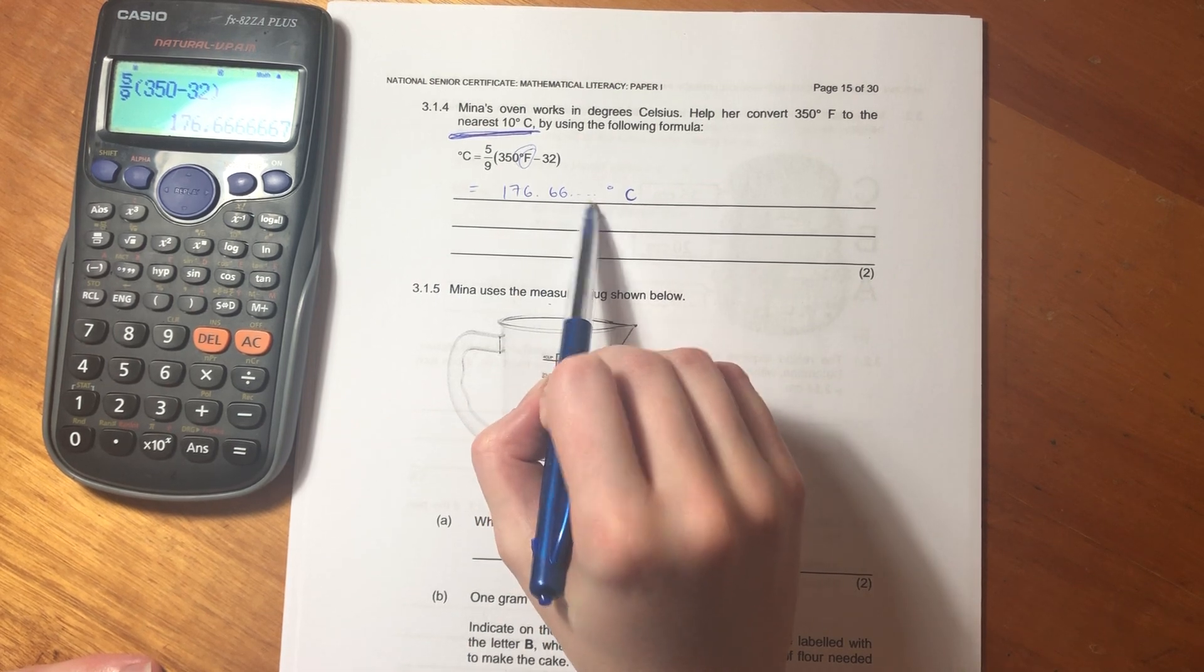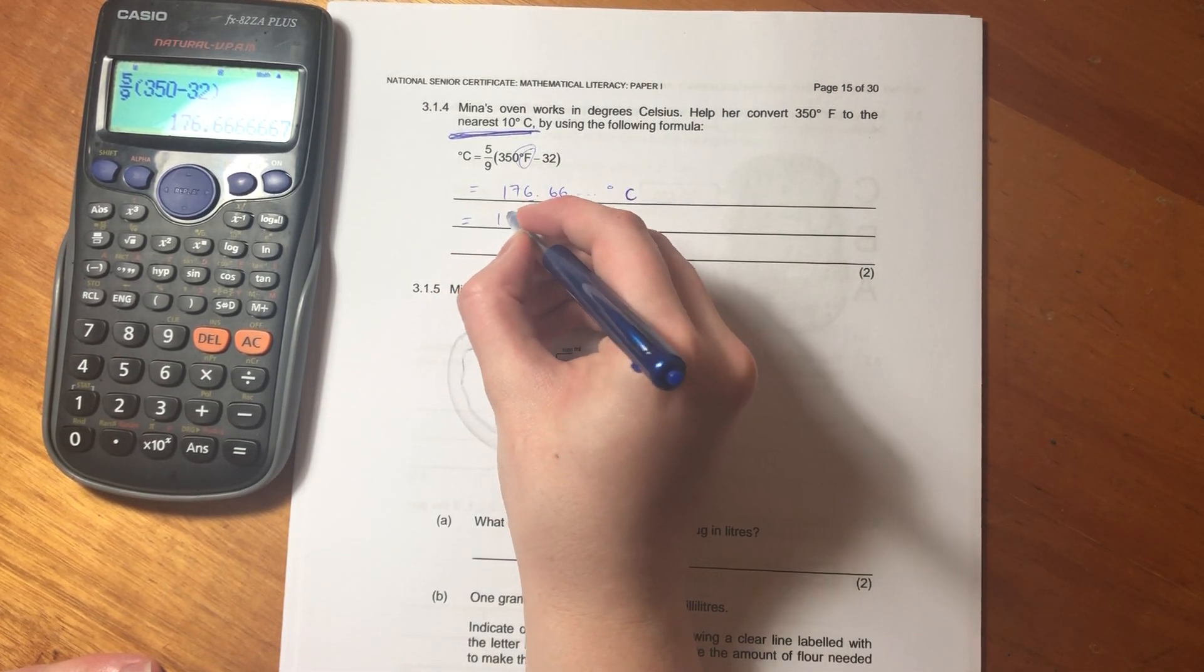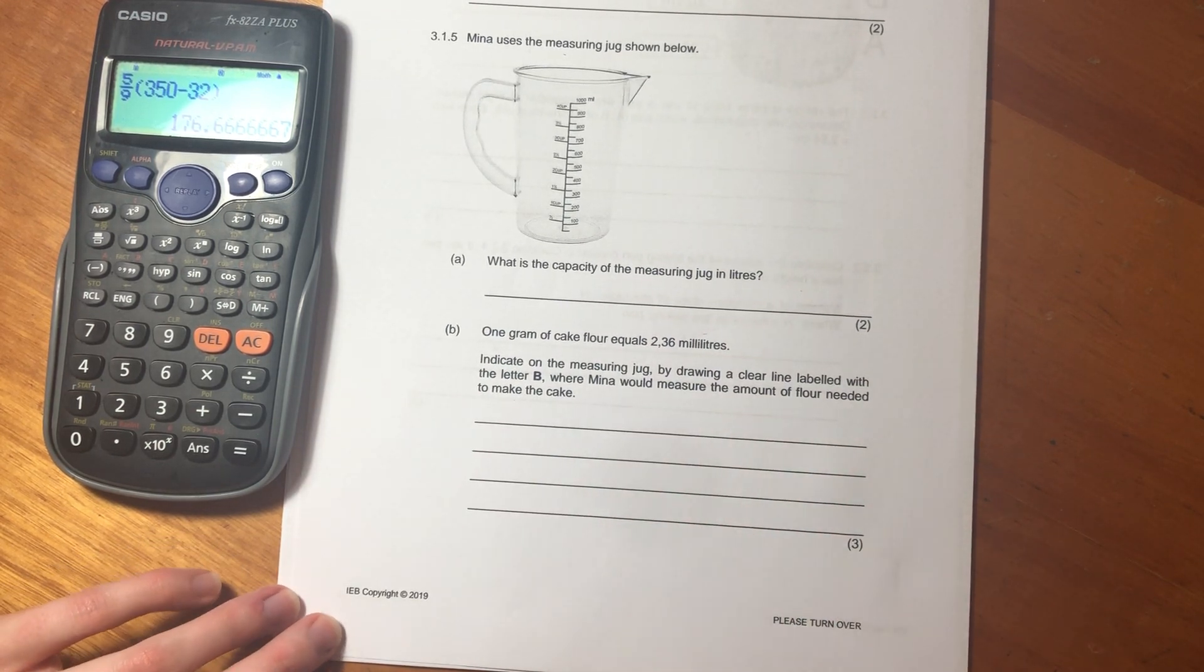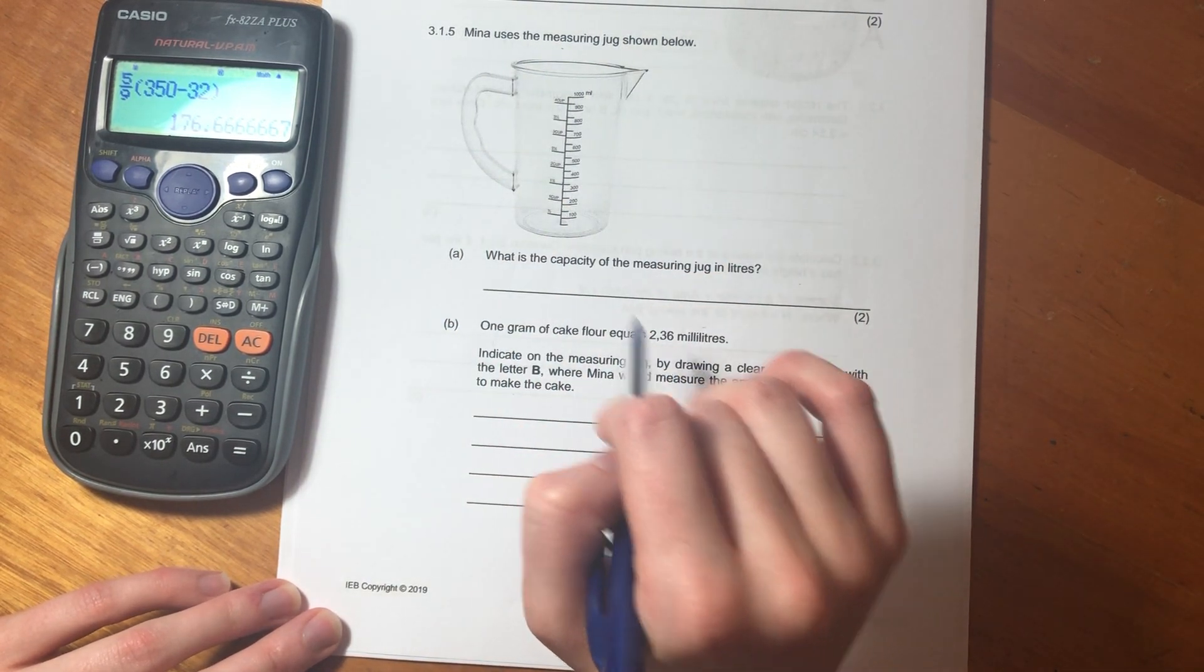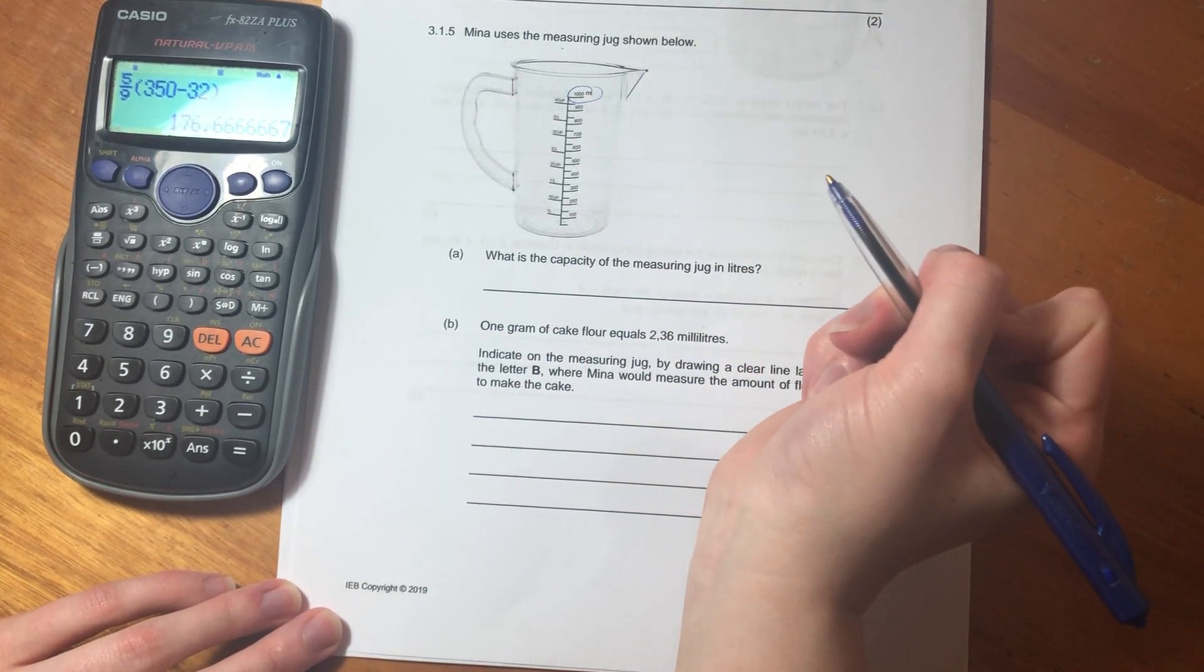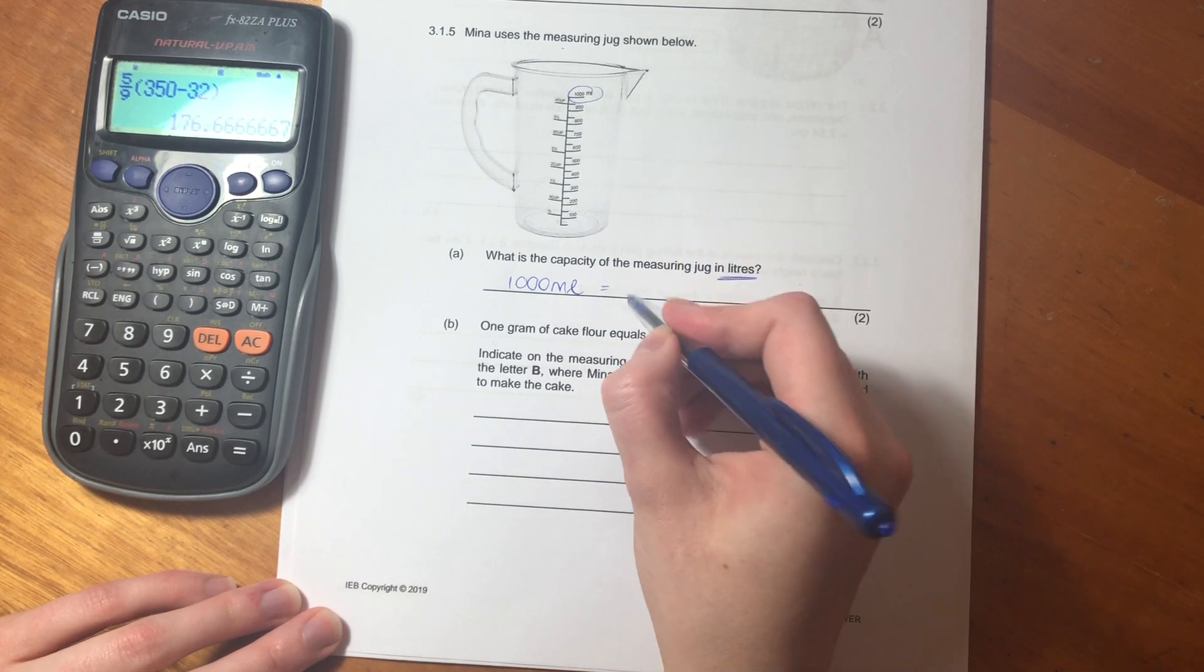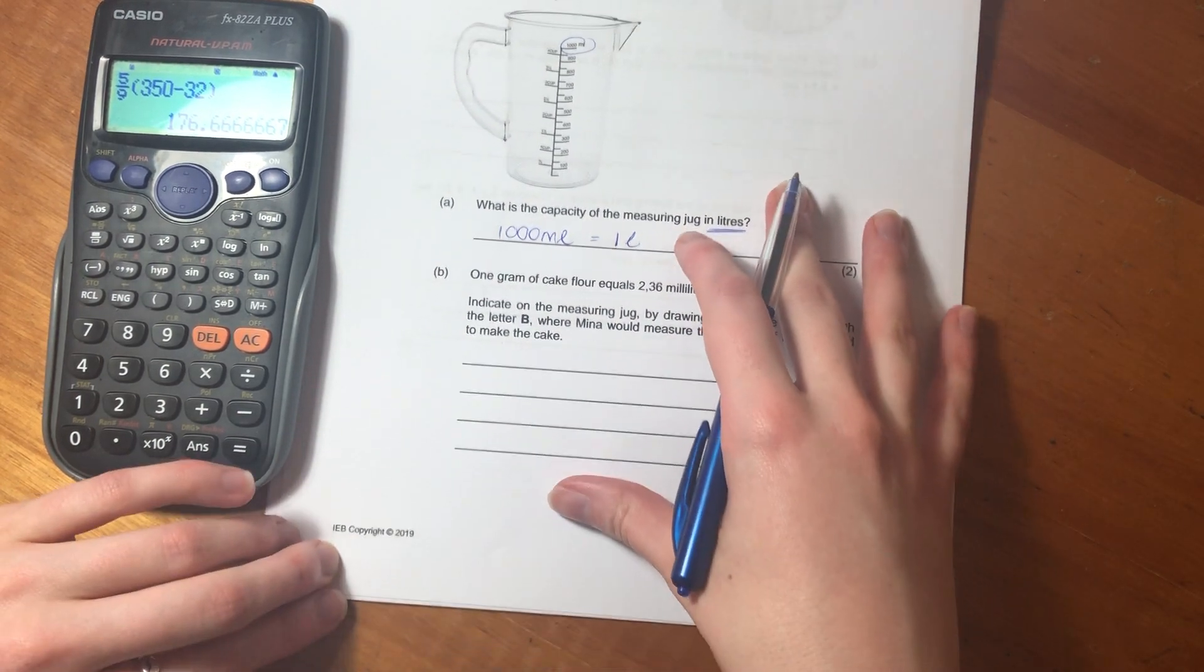But what did it say? It said to the nearest 10. Now is this closer to 180 or to 170? That 6 is greater than 5, we know we need to round it up to the nearest 10, which is 180 degrees. Mina uses the measuring jug shown below. Lovely little measuring jug. What is the capacity of the jug in liters? We see that the top capacity over here is in milliliters. We know that it's 1,000 milliliters, but it asks for it in liters. We know, and if you don't know this you must learn this guys, one liter equals 1,000 milliliters. So the answer is one liter.